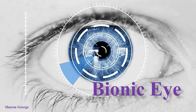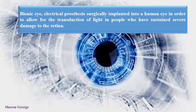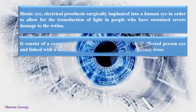that is surgically implanted into the human eye in order to allow for the detection of light for those whose substance — meaning the cells — are damaged in the retina. One such retinal damage is retinitis pigmentosa. Retinitis pigmentosa, or RP, is a group of rare genetic disorders that involve the breakdown and loss of cells in the retina.